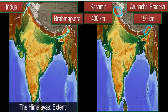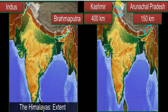Talking about the Himalayas: the Himalayas extend from the Indus River in the west to the Brahmaputra River in the east. Himalaya means 'abode of snow.' These mountains run from west to east for about 2,500 kilometers in an arc shape. The width varies from about 400 kilometers in the west in Kashmir to about 150 kilometers in the east in Arunachal Pradesh.